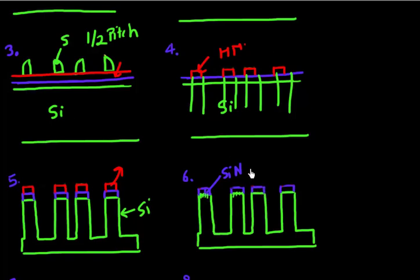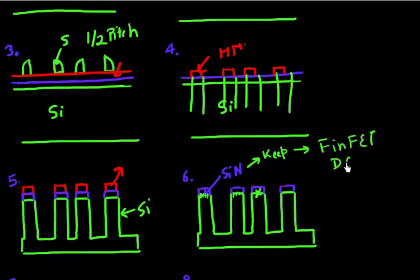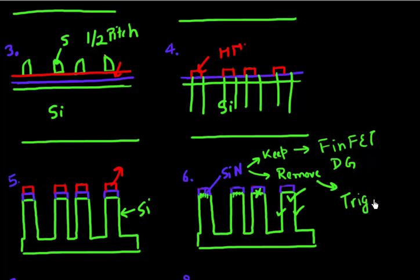At this point we can decide whether we want to keep this silicon nitride hard mask. If we keep it, we don't use the top surface for current conduction, and we are left with what is more commonly known as a FinFET or a double gate device. If we decide to remove this hard mask, then we use this top surface in conjunction with the sidewalls for current conduction, and it's more commonly known as a tri-gate device or 3D transistor as Intel likes to call them. So we can make that decision at this point whether we want to keep the silicon nitride or not.